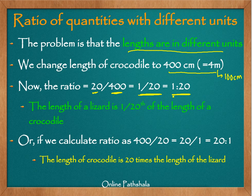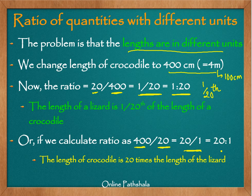Now we take the ratio: 20 by 400, which gives us 1 by 20, or 1 is to 20. This makes sense — the lizard is one-twentieth the size of the crocodile, meaning the lizard is 20 times smaller. Conversely, the ratio of the crocodile's length to the lizard's length is 400 by 20, which gives 20 is to 1, meaning the crocodile is 20 times longer than the lizard. This aligns with our observation.